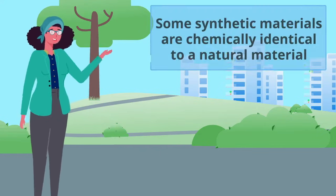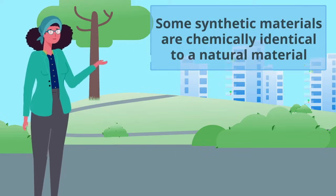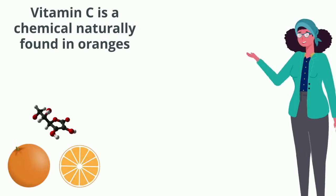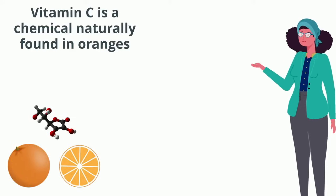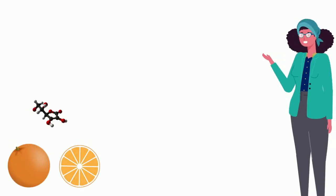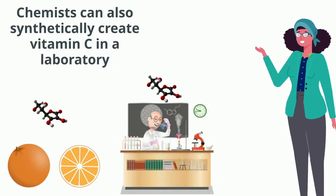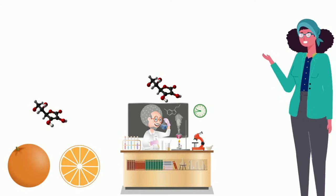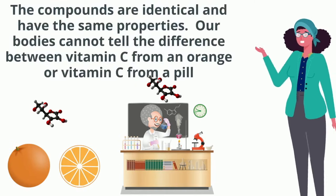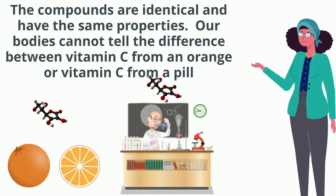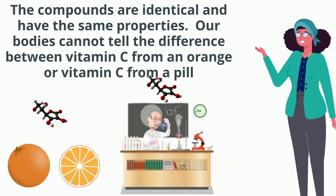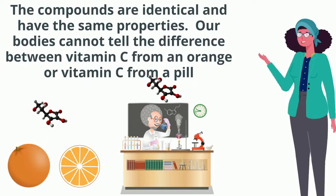Some synthetic materials are chemically identical to a natural material. Take this vitamin C here. Vitamin C is a chemical naturally found in oranges. Chemists can also synthetically create vitamin C in a laboratory. The compounds are identical and have the same properties. Our bodies cannot tell the difference between vitamin C from an orange or vitamin C from a pill.